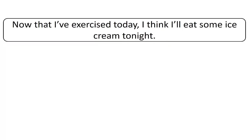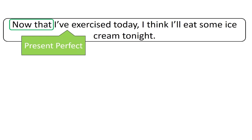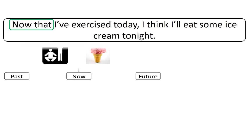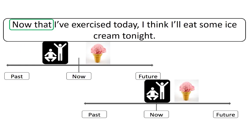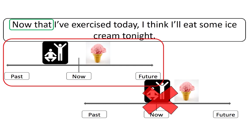'Now that I've exercised today, I think I'll eat some ice cream tonight.' In this sentence, we have the conjunction 'now that,' which means 'because now.' That means we use some aspect of present tense with this phrase. You'll need to decide if the action of exercise happened in the past or if it is happening now. If you chose the first timeline, then you are correct. Although this action happened in the past, we use present perfect because the time period of today is not finished yet.